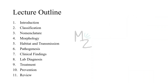Lecture outline: We're done with the introduction. Now we'll be looking at the classification of bacteria and also Salmonella. Then we'll look at the nomenclature of Salmonella, then its morphology, habitat and transmission, pathogenesis, clinical findings, lab diagnosis, treatment, prevention, and at the end, as usual, we'll review the lecture.